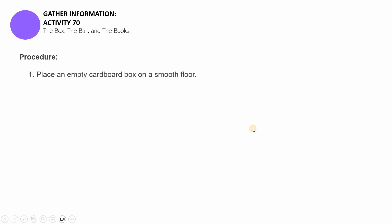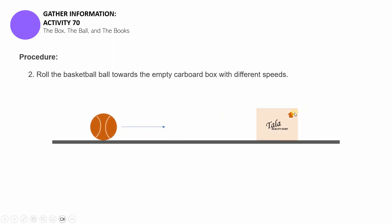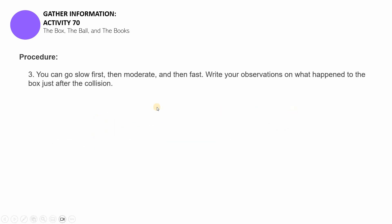All right. So, for the first step, you have to place an empty cardboard box on a smooth floor. And then, for the second step, you roll a basketball ball towards the empty cardboard box with different speeds. Pwedeng fast, tapos, you can go slow, and then quite moderate, and then fast. And then, you have to write your observations on what happened to the box just after the collision. So, nung slow lang yung pagkakapush, yung speed nung ball towards the box, what happened to the box after the collision. And then, nung medyo mabilis na ng very light, pero not super, what happened to it? And then, nung super bilis nung pagkakapush mo, yung velocity ng ano, napakabilis niya. What happened?